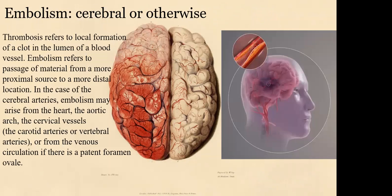We commonly know embolism in the context of cardiovascular diseases, but it can also happen in other organs, and one of the major organs is the brain — cerebral embolism. There is a difference between thrombosis and embolism: thrombosis refers to the local formation of a clot in the lumen of a blood vessel, while embolism refers to passage of material from a more proximal source to a more distal location.